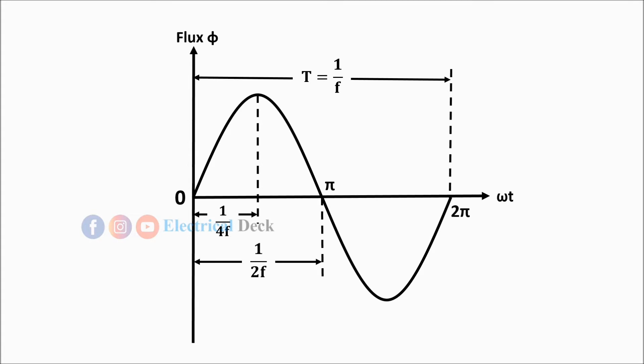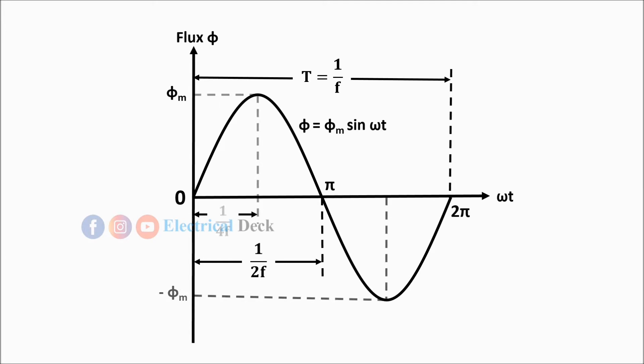The equation for a sinusoidal waveform is given by φ = φm sin(ωt). We can notice that the time taken to reach the maximum flux value φm is 1/4f, and −φm is reached in the negative half cycle.